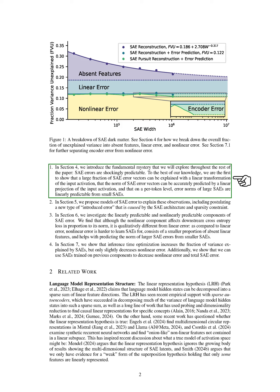We outline the structure of our paper as follows. In the first section, we reveal a key finding: SAE errors are surprisingly predictable. We demonstrate that a significant portion of SAE error vectors can be explained through a linear transformation of the input activations. We also show that the size of these error vectors can be accurately predicted from the input activations, and that the error norms of larger SAEs can be predicted from smaller ones.